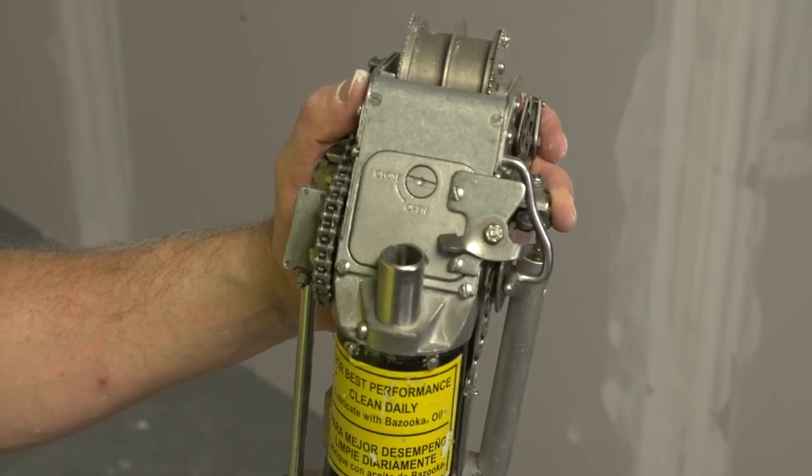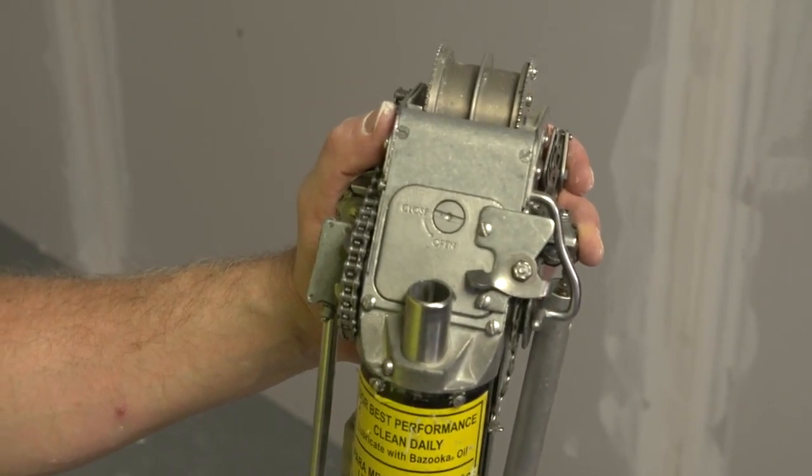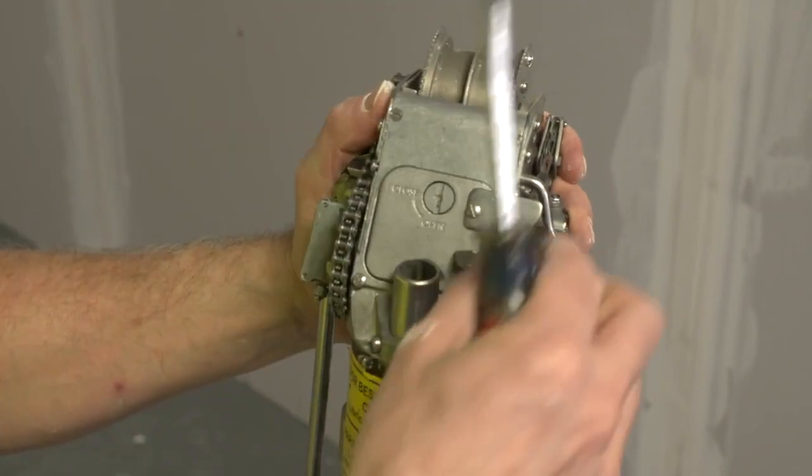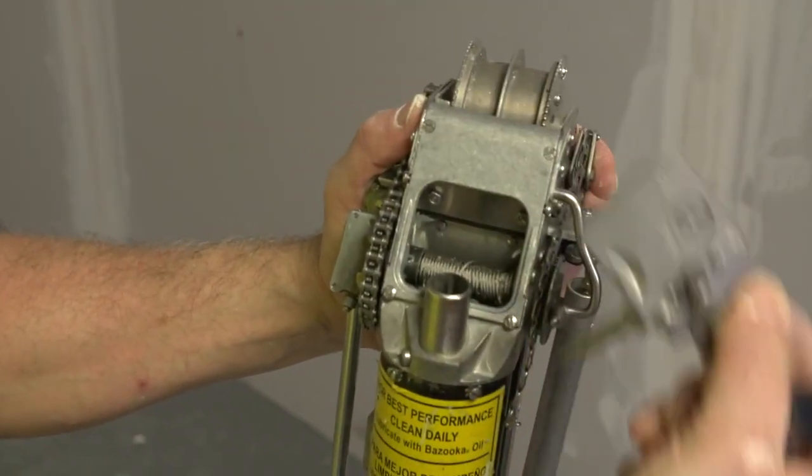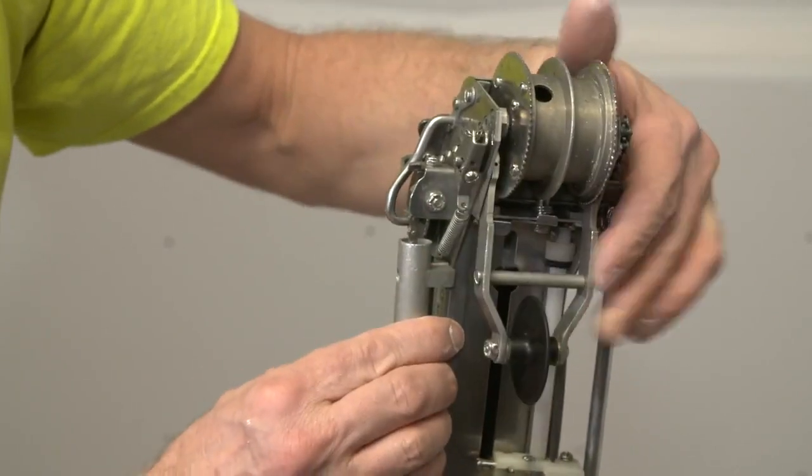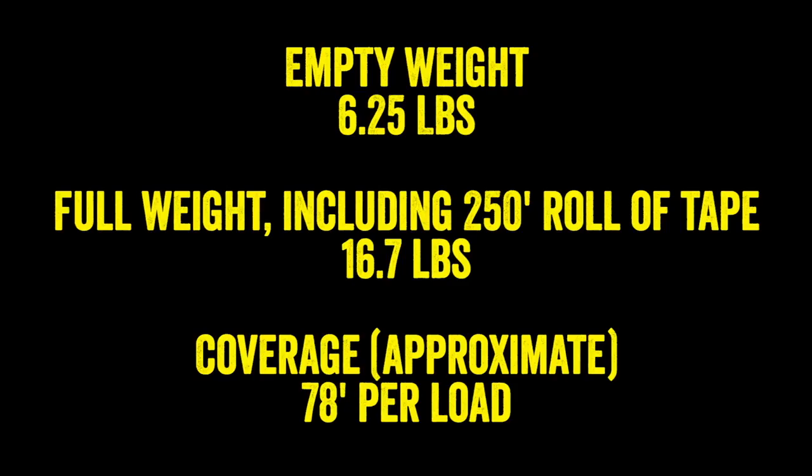The easy clean cover plate on the top of the bazooka opens up with just a quarter turn, giving you quick access to the bazooka's internal components for cleaning and maintenance. The adjustable brake allows you to set and maintain the desired tension on the main wheels. The bazooka is thoughtfully engineered to dramatically improve the efficiency and comfort of taping.